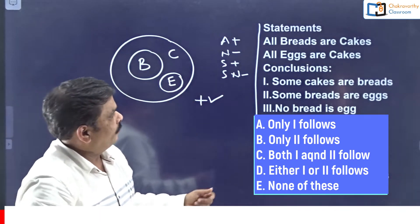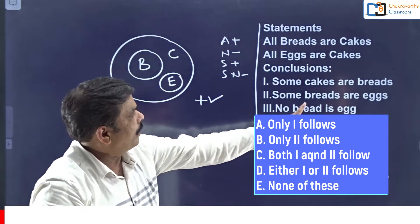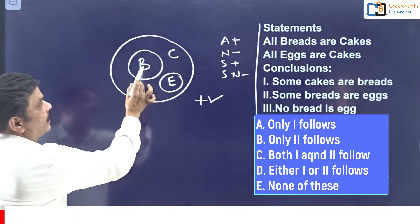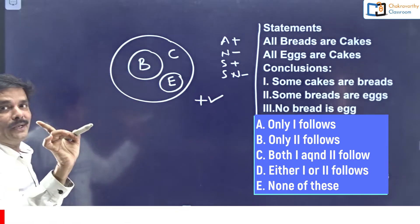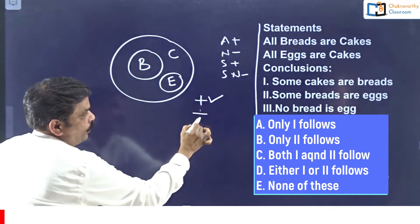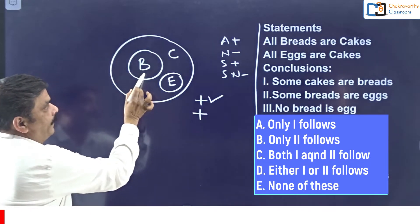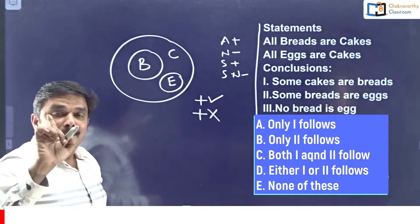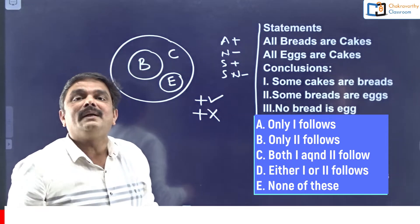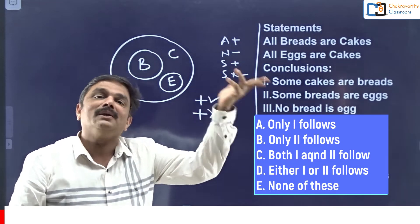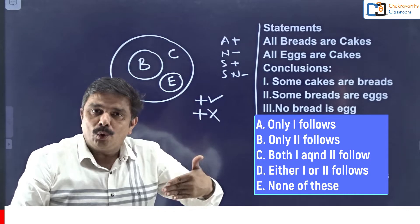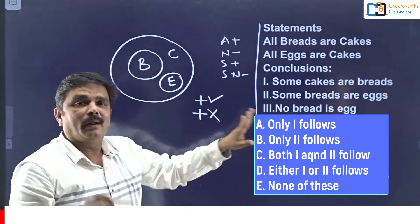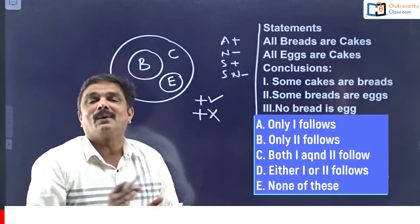What about the second conclusion: Some breads are eggs? According to the basic diagram, sum is positive but bread and eggs are separate - this is wrong in the basic diagram. In the next diagram it may be true, we don't know. If required we go for the next diagram; if not required, we stop here.